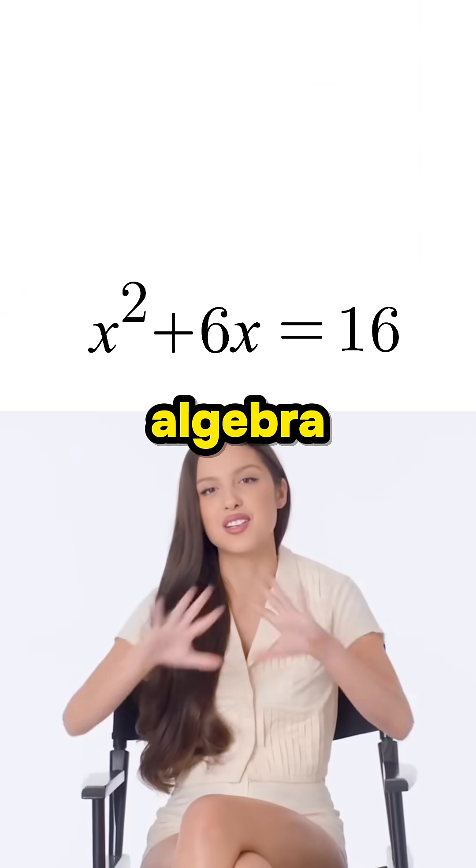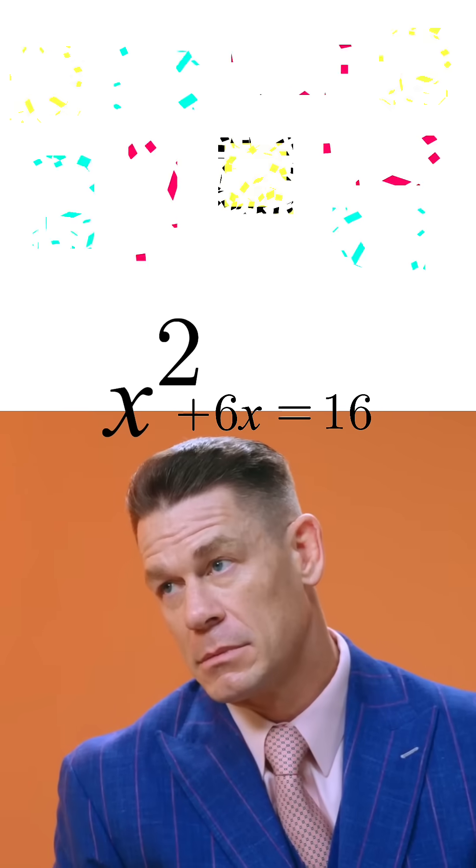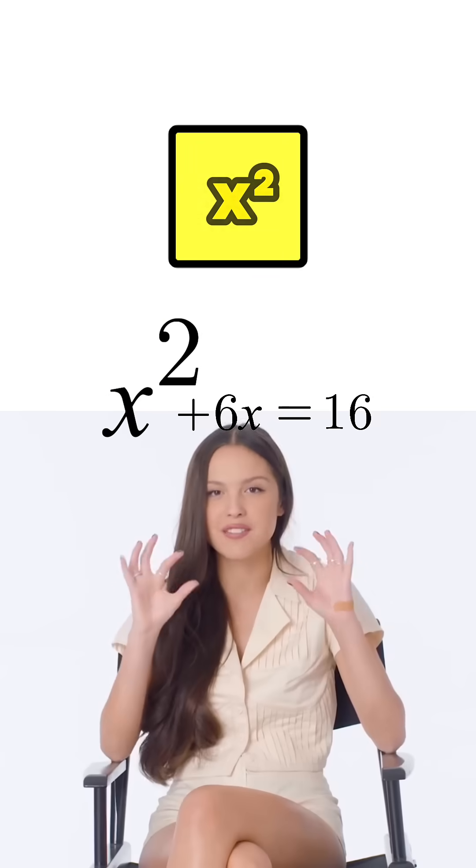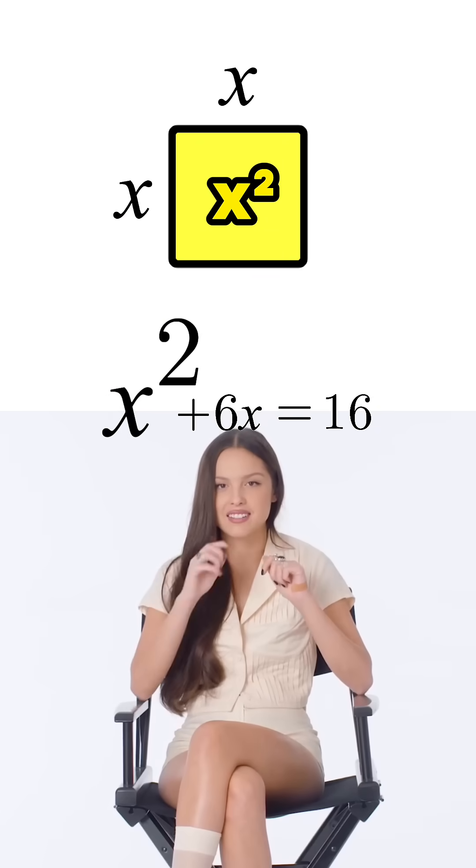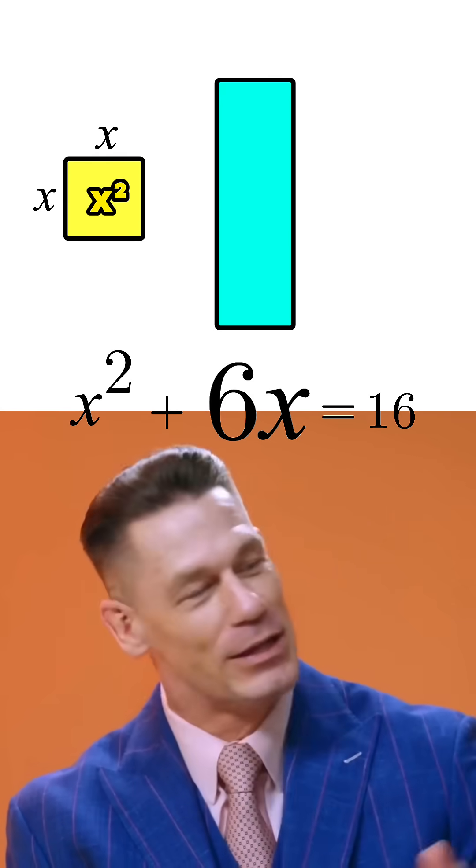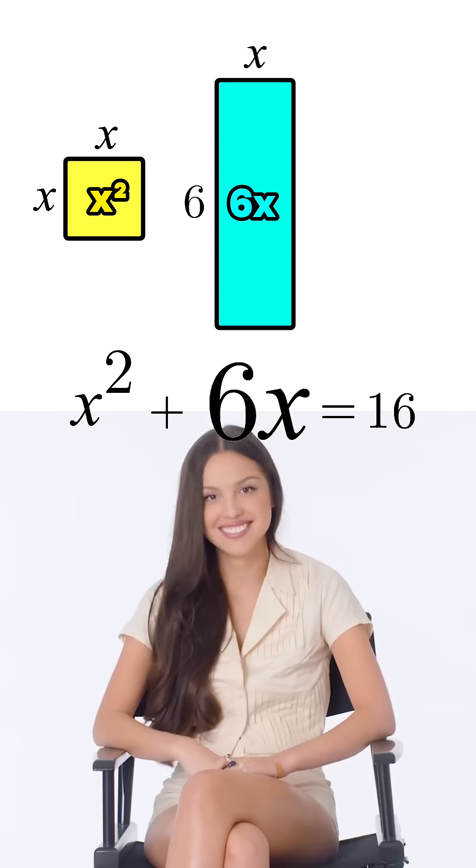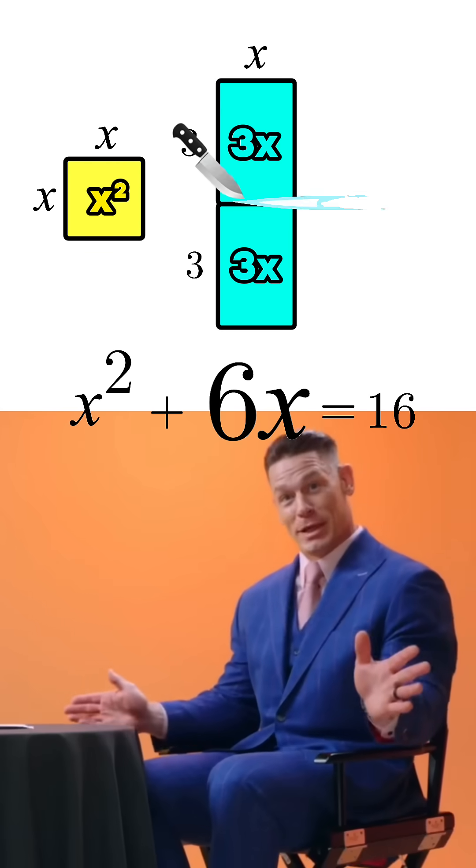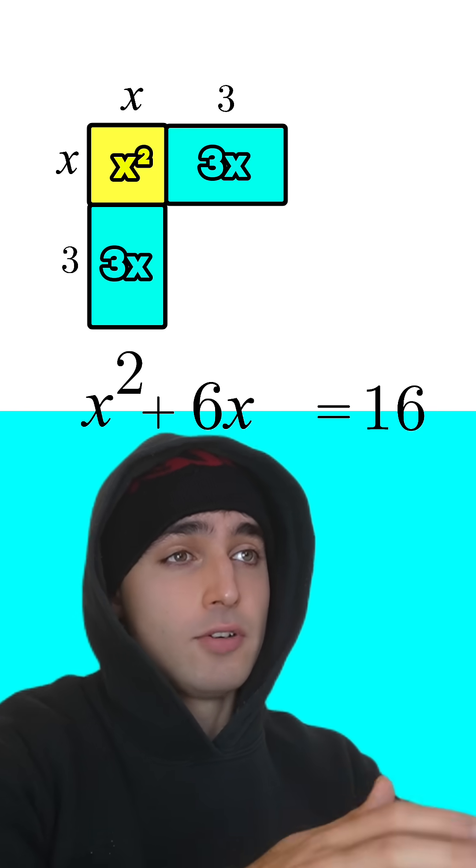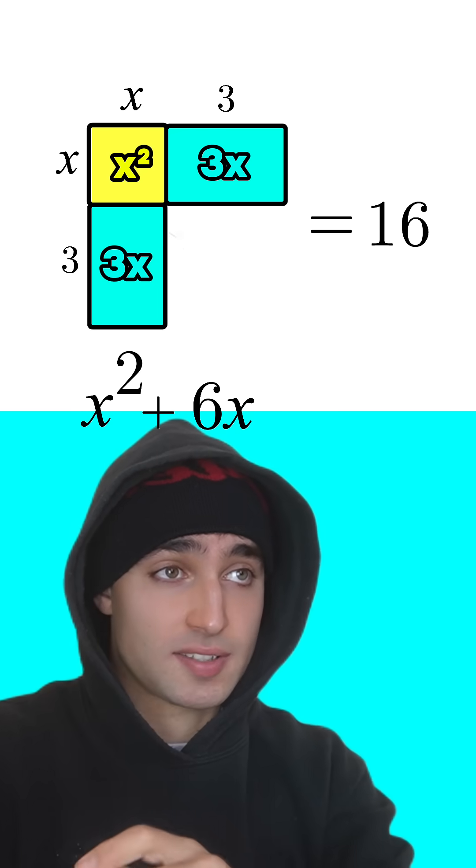Well, I like to think of algebra using shapes. So look, x squared is like the area of a square with sides of length x, right? And 6x, that's like the area of an x by 6 rectangle, which we can split in two. So the area of these shapes equals 16.